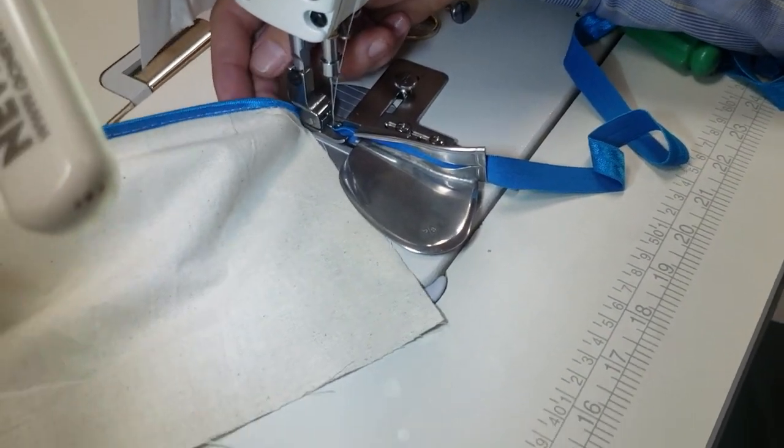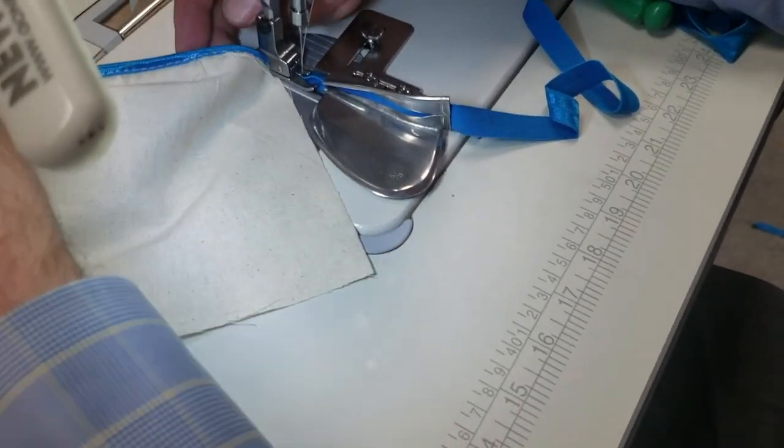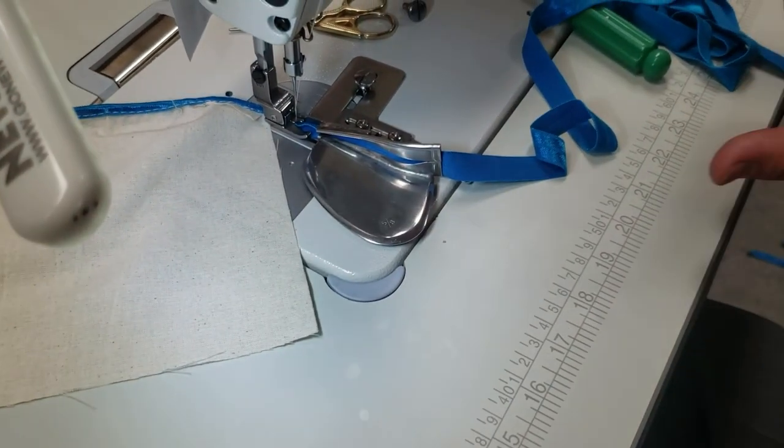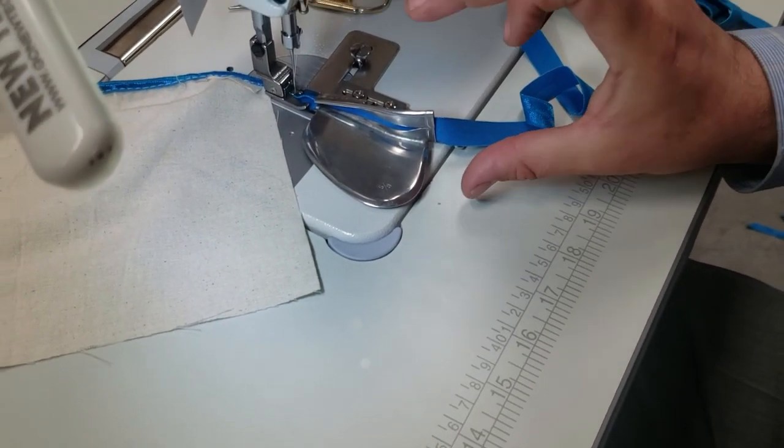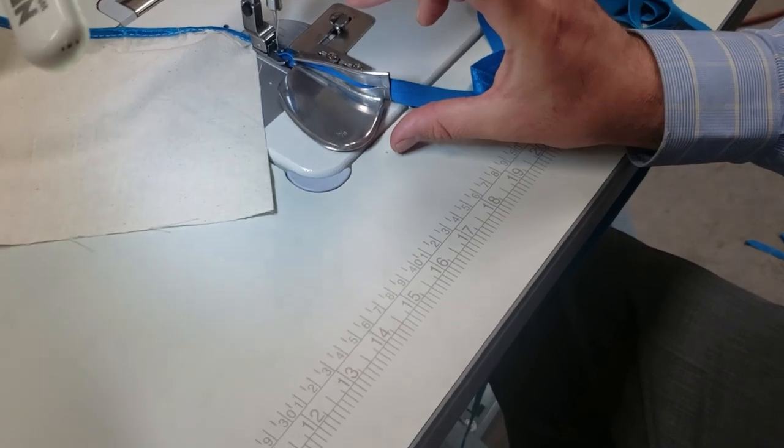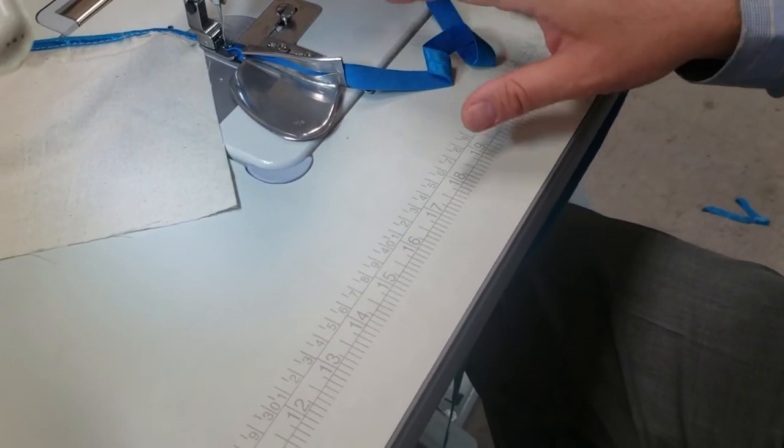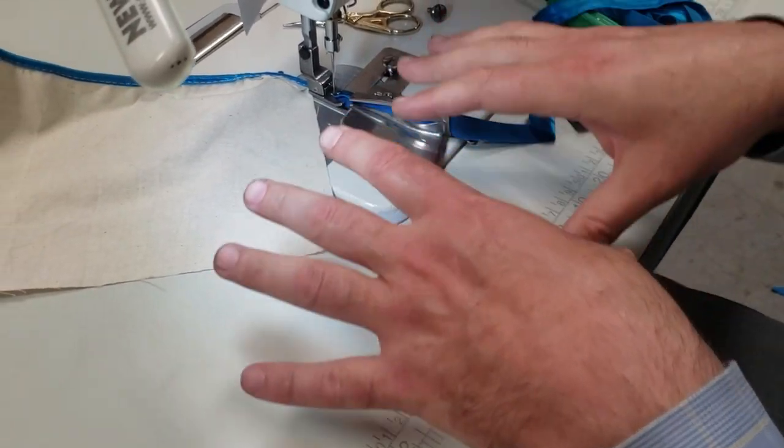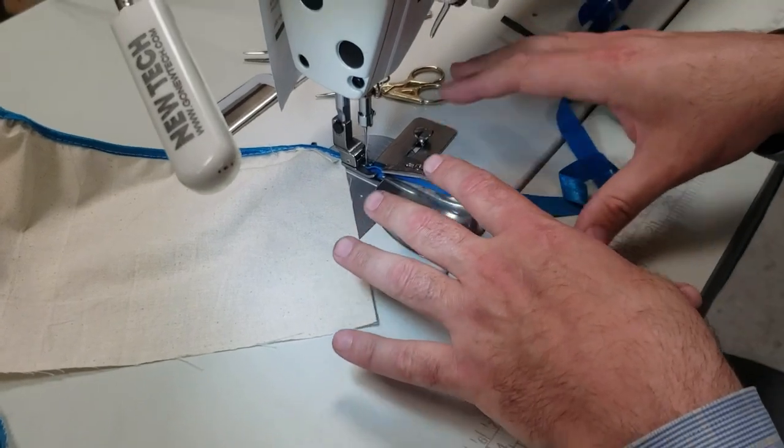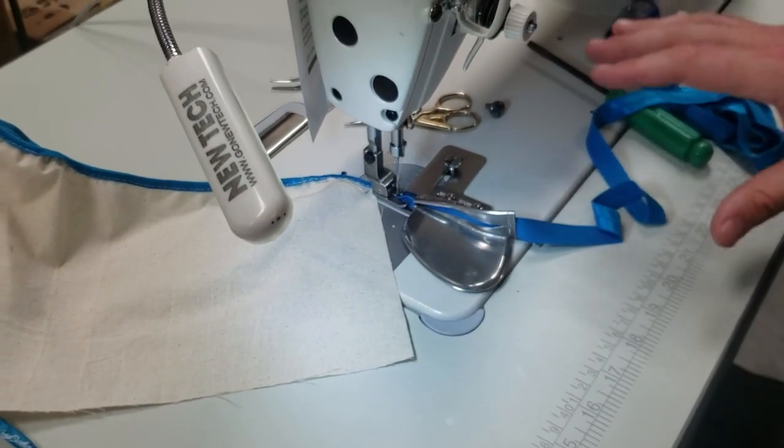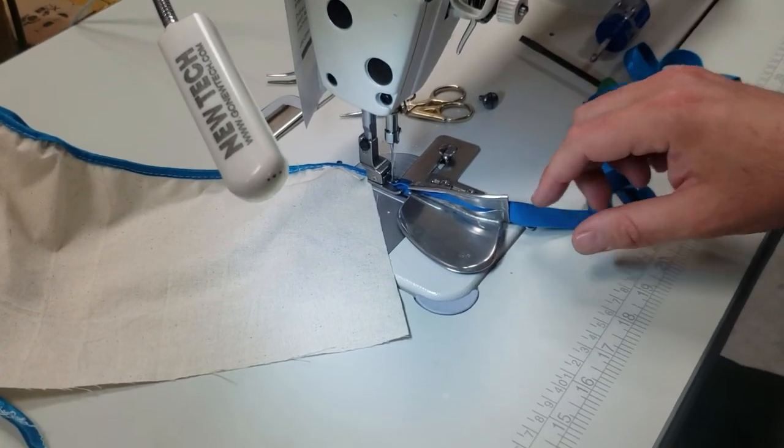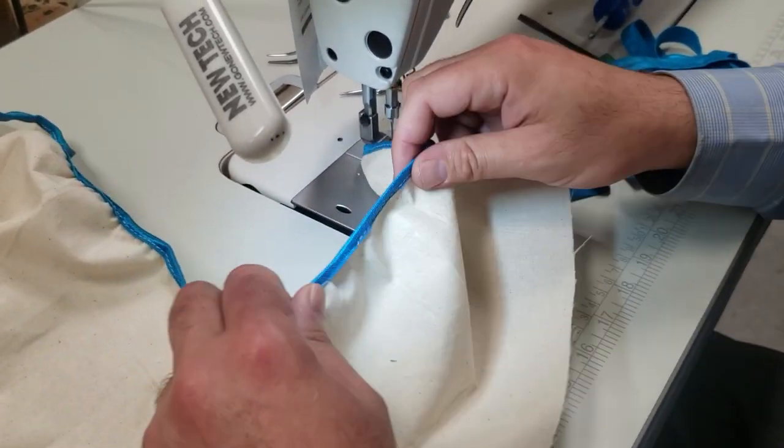But if you do it right, see how nice the whole thing came out, it will work out. Now when the folder or the bias is larger, two inch or one and a half, you don't have this problem. You could easily move the bias and folder back and forth.